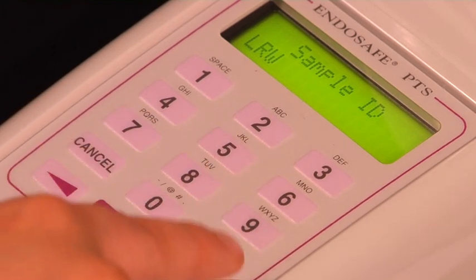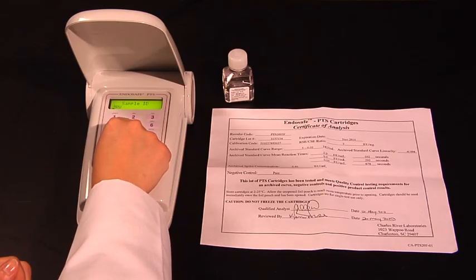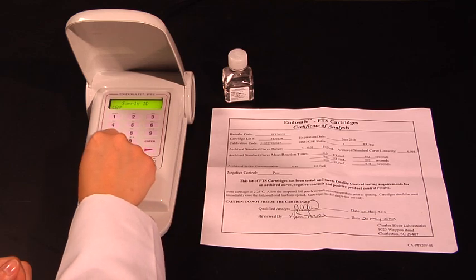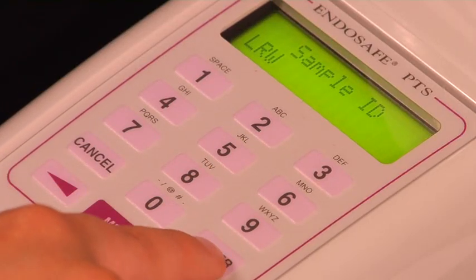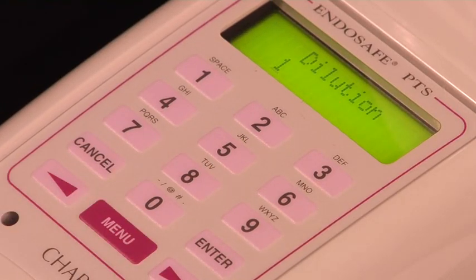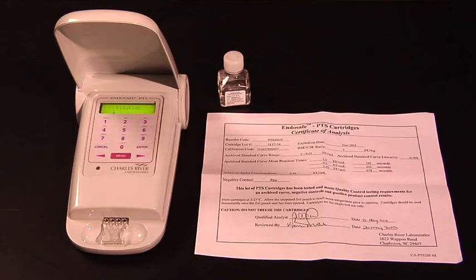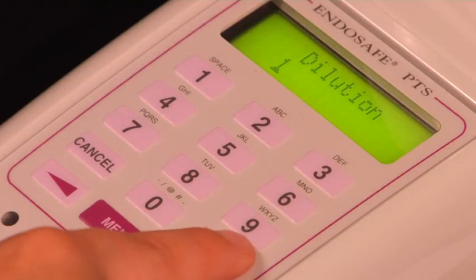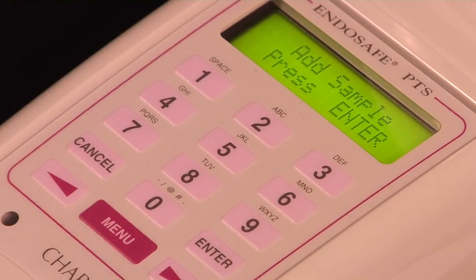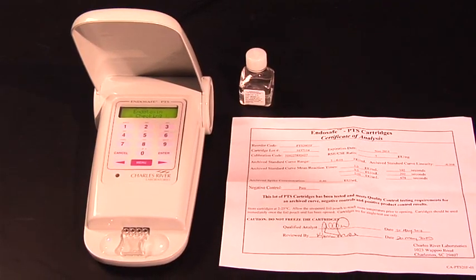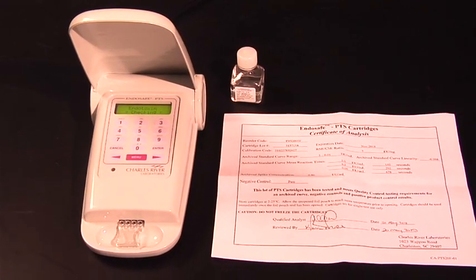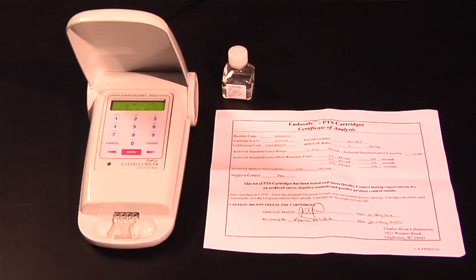Enter the sample ID. You can select and scroll with the menu key under the sample ID header, which allows for 50 samples to be entered and stored. Enter dilution factor. Here, we are testing LAL water undiluted by pressing 1. However, if you have to dilute a sample, then enter 10 on the keypad for a 1 to 10 dilution.